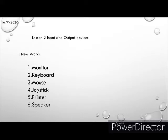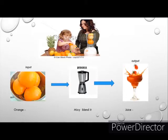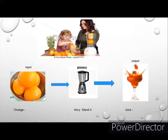Today we are going to study input and output devices. Can you see the picture? What is that girl doing? She is helping her mother to make juice. For making orange juice, what do we need? We need some oranges, sugar, and water or milk. We give oranges, water, and sugar into the mixer. The mixer blends it and we get tasty juice. The mixer processes all these things.